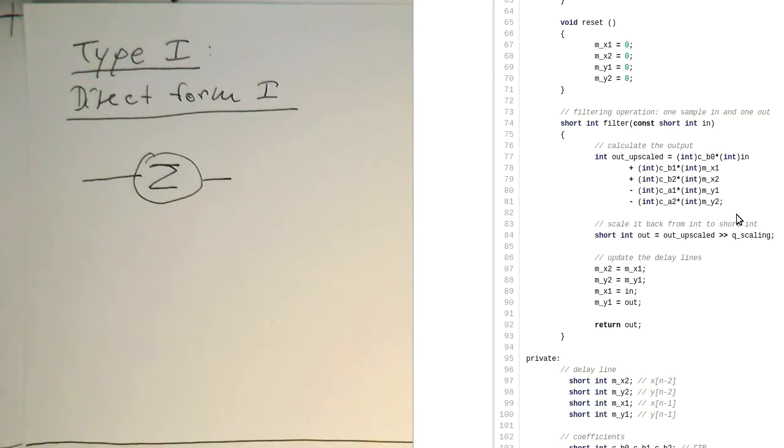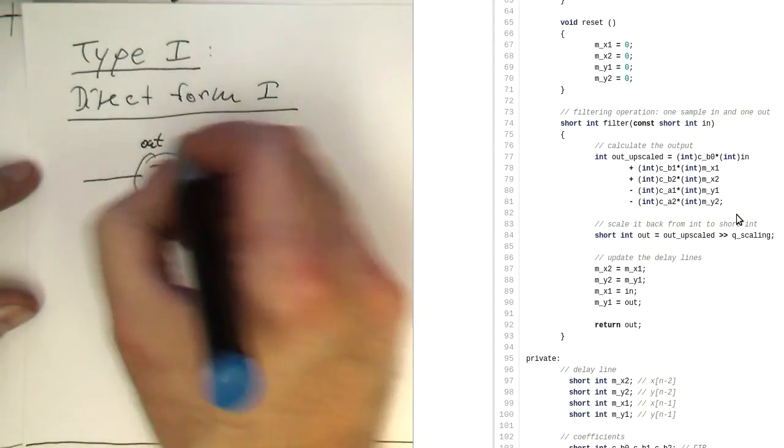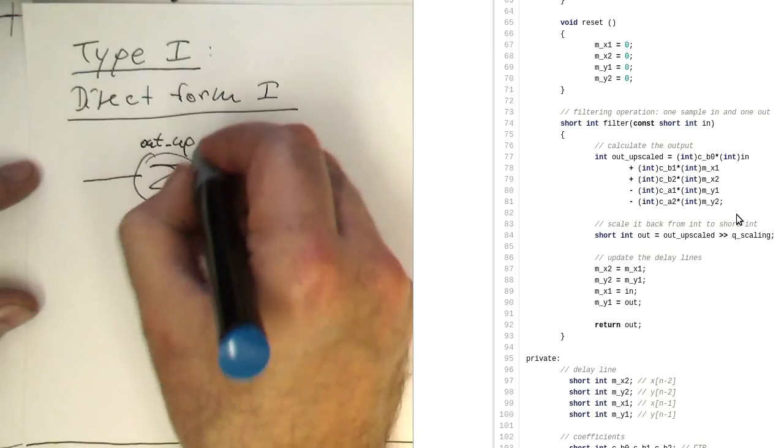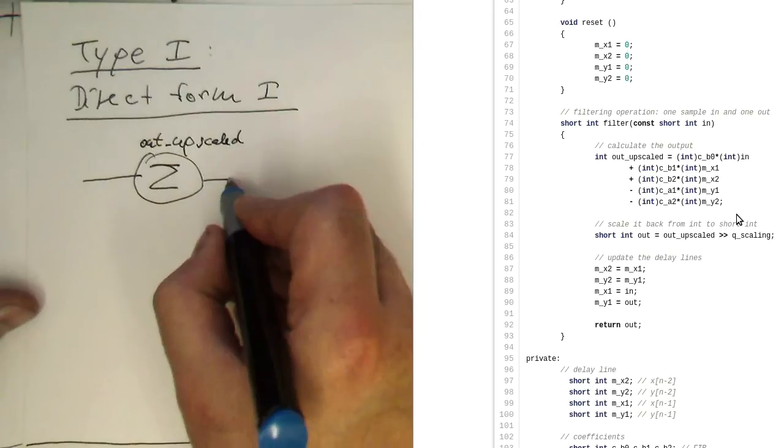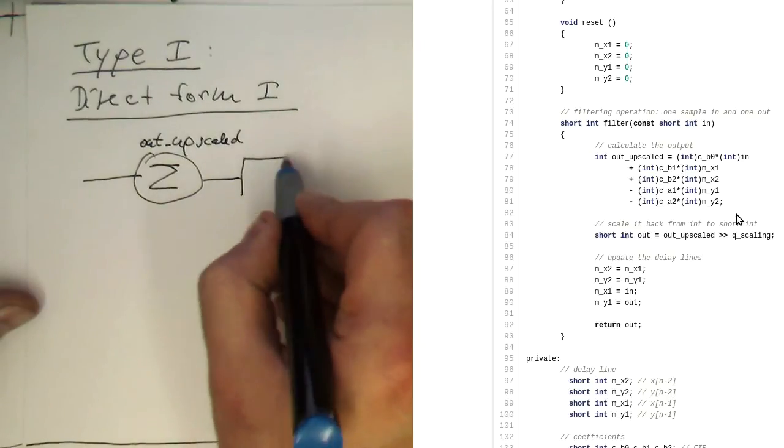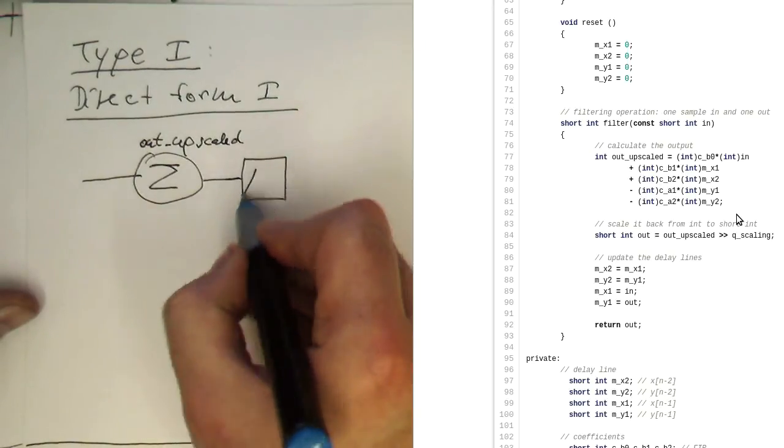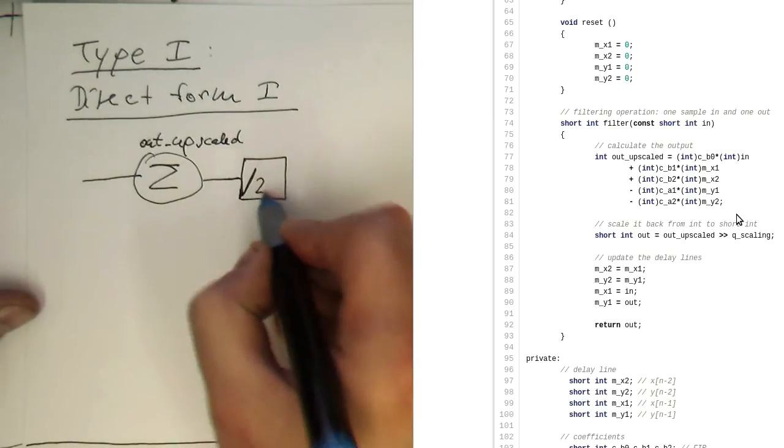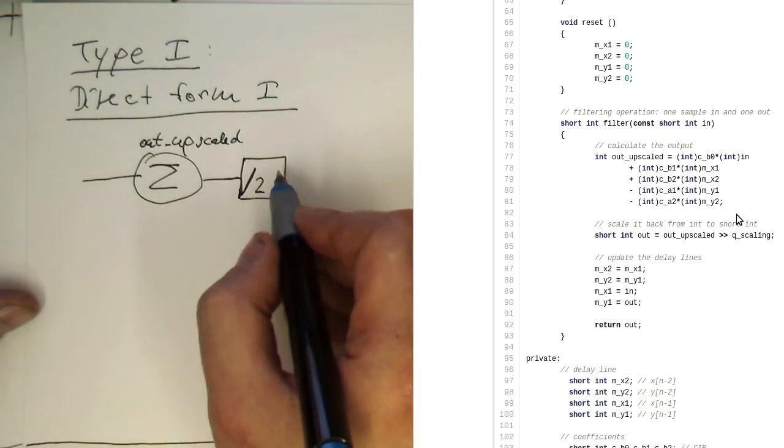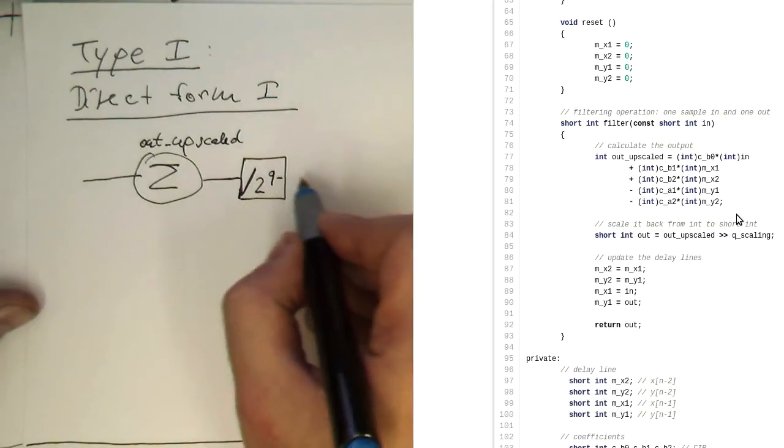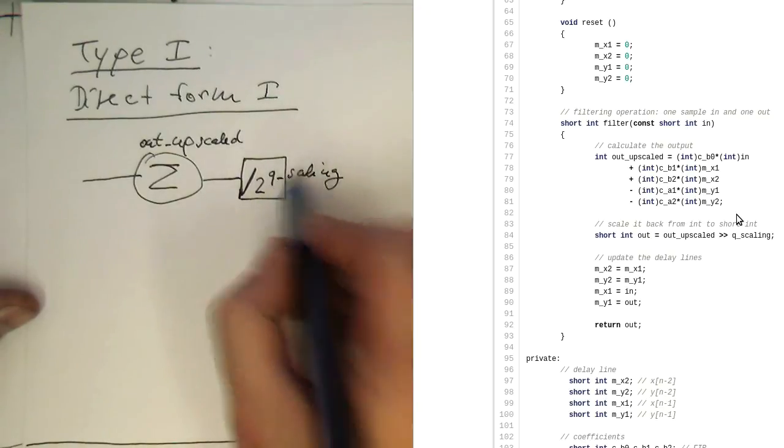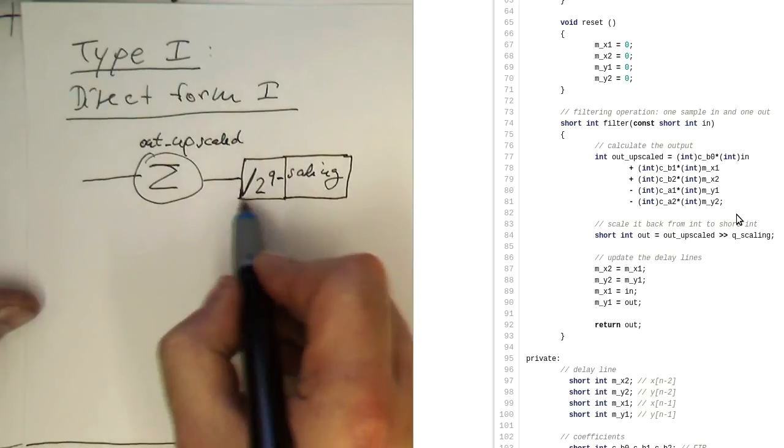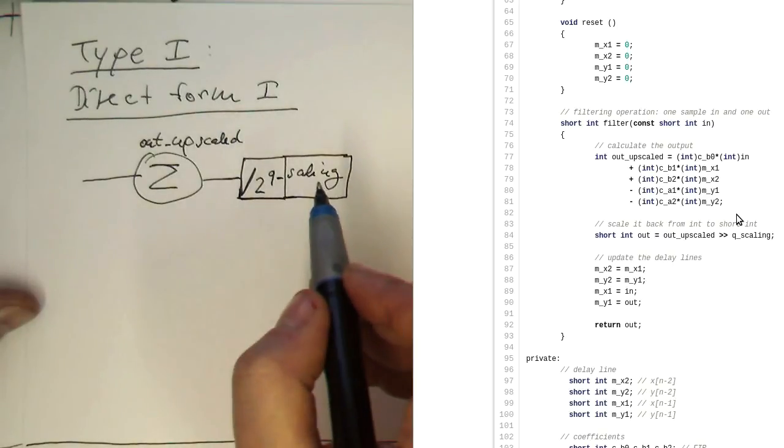Our accumulator is upscaled, and then this accumulator is divided by the Q factor Q scaling. Basically this one is called out_upscaled. And then here after this we have a division operation.